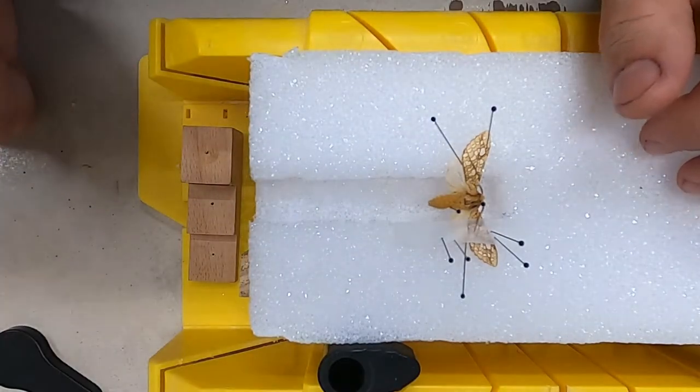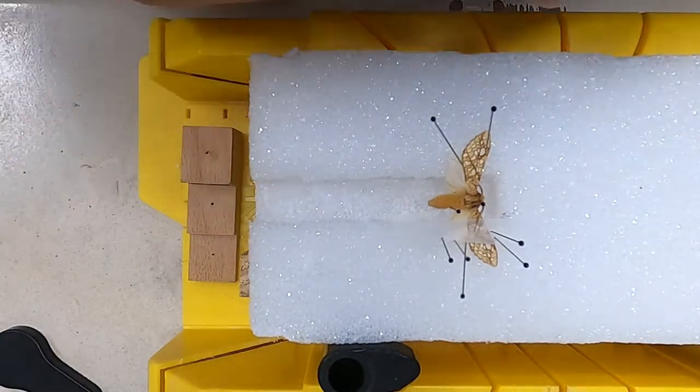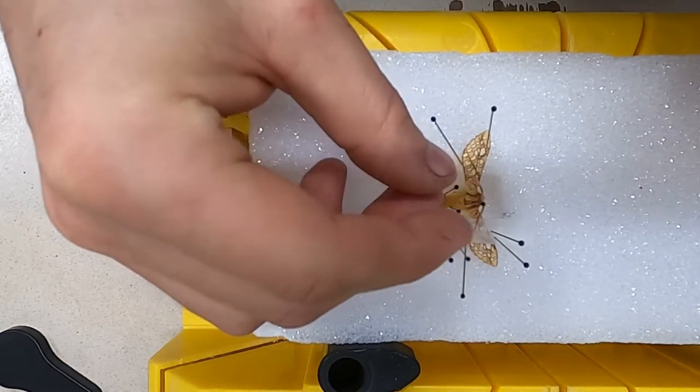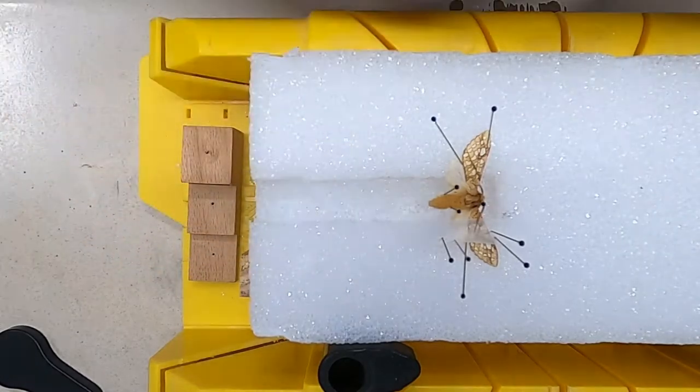Once again, you want to use some paper or some wax paper to flatten out the wing and pin the paper so that the pressure from the wax paper will hold the wings flat.